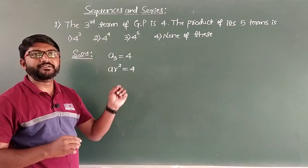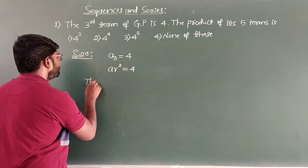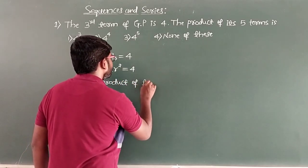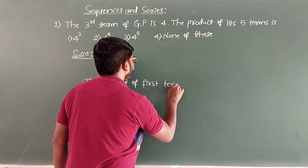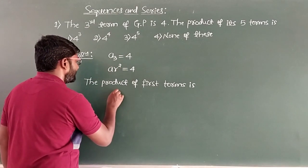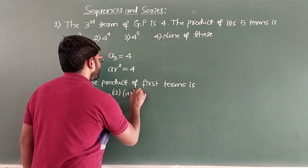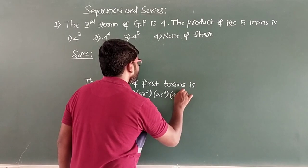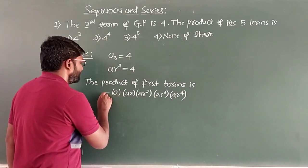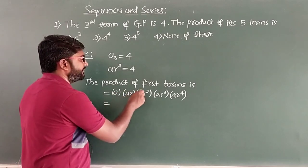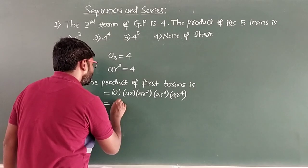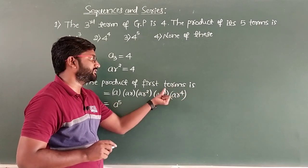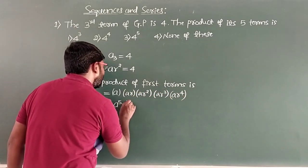Now we will find the product of the first five terms. The product is A × AR × AR² × AR³ × AR⁴. Here A is multiplied 5 times, giving A⁵. For R, we add all the powers: 0+1+2+3+4 = 10, giving R¹⁰. So the product is A⁵ × R¹⁰.